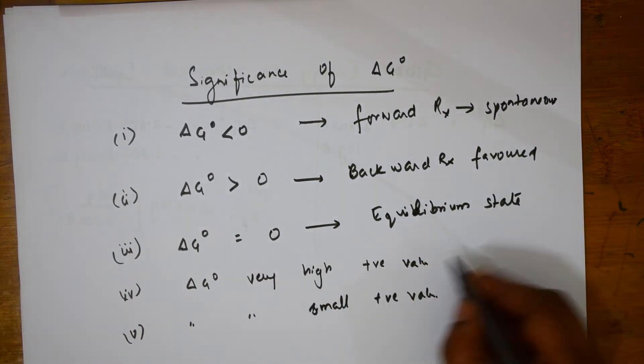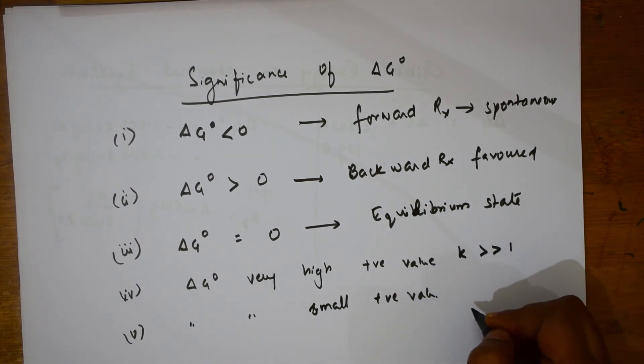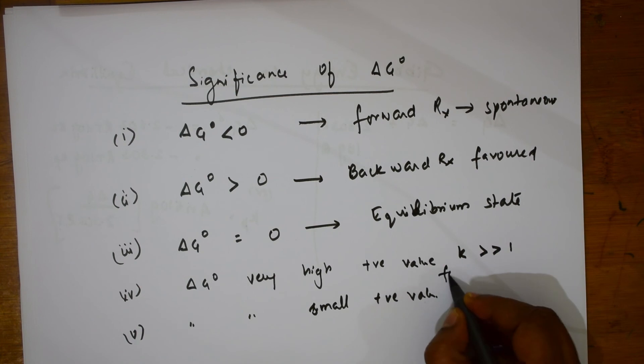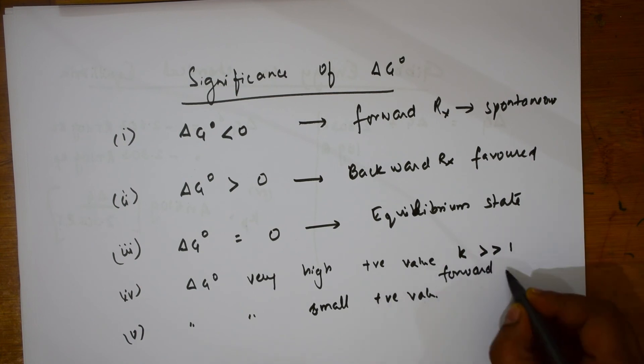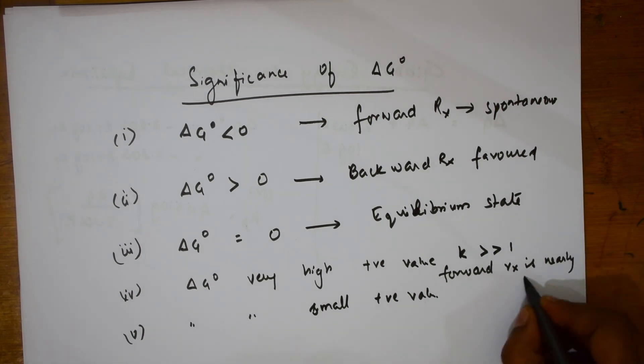If it is very high positive value, that means K is very much greater than 1. That means the forward reaction is nearly complete.